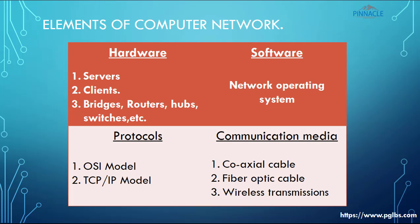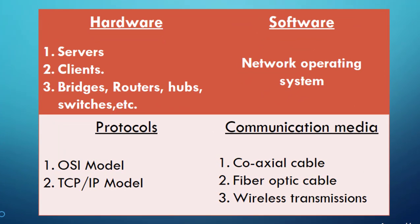In order to connect computers together in a computer network, you need certain elements, which I have segregated into four sections: hardware, software, protocols, and communication media. In the hardware section you have servers, clients, bridges, routers, hubs, and switches. Any physical components used to connect computers in a network fall under hardware — for example, file servers, database servers, thick clients, thin clients, bridges, routers, and hubs.